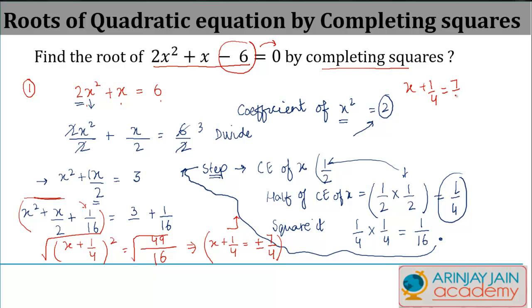x + 1/4 = 7/4, which means x = 7/4 - 1/4, or in other words, you get 6/4 or 3/2. The second one is x + 1/4 = -7/4. If you take this to the other side, which gives -2. So these are the values of x which we have been able to find out by using the completing squares method.